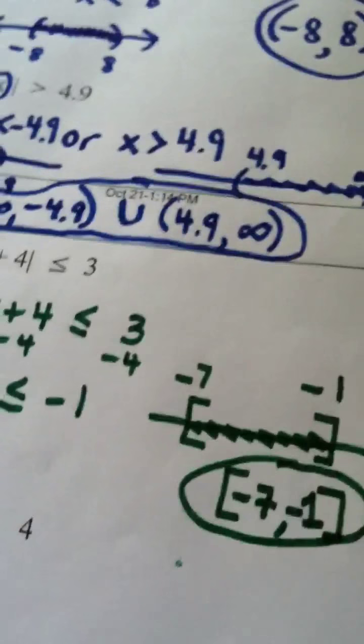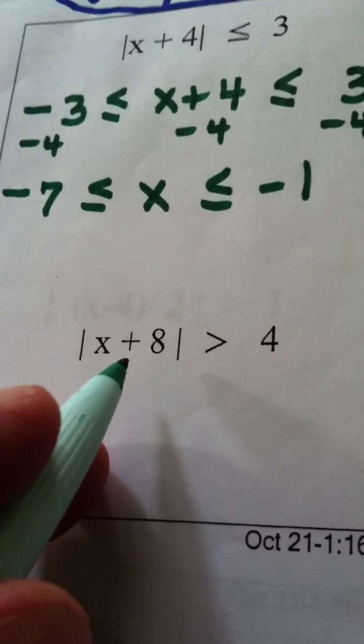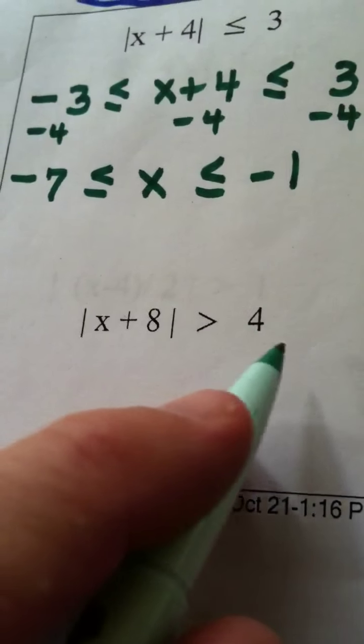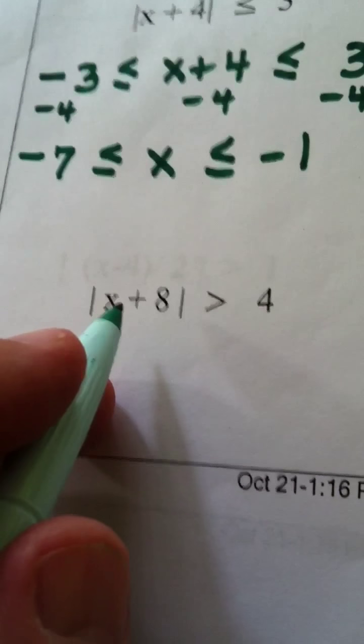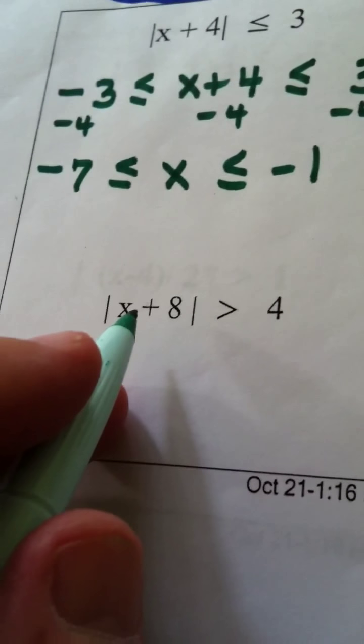Alright, now the next one. This time, absolute value of x plus 8 is greater than 4. This is not a sandwich, this is what we call the restraining order.